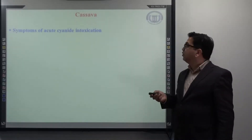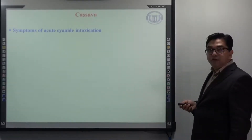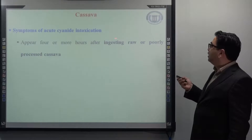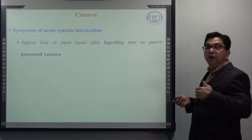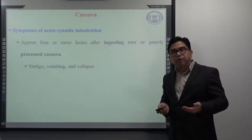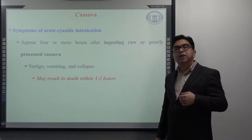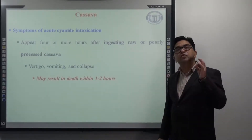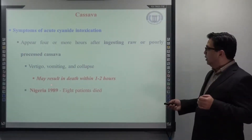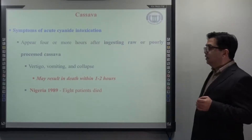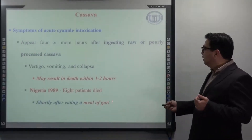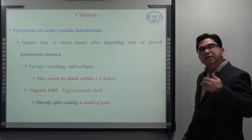Regarding the symptoms of acute cyanide intoxication, which happens immediately, it appears almost four or more hours after ingesting raw or improperly processed cassava root. The symptoms are vertigo, vomiting, and collapse, which may even result in death within just one to two hours of consumption. In Nigeria in 1989, eight patients were reported to have died immediately after consuming a meal of gari.